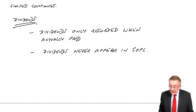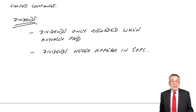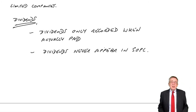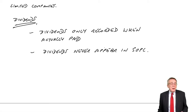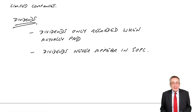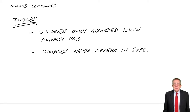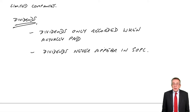Because we only record dividends when they're paid, if we proposed at the end of this year that we're going to pay a dividend of 2,000, we don't actually show it as owing. We don't show a liability on the statement of financial position, because it's not certain — in theory, things might change, shareholders might vote against it. We only record dividends when they're actually paid.